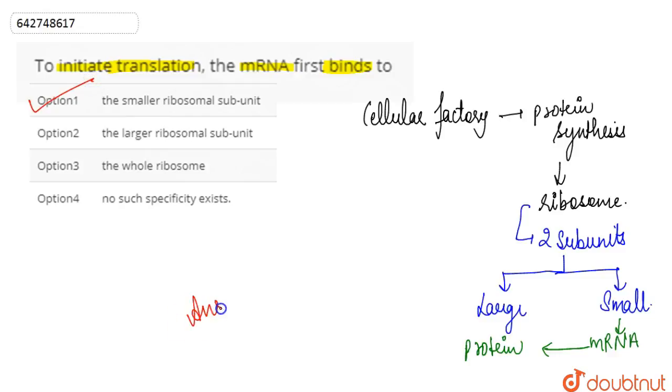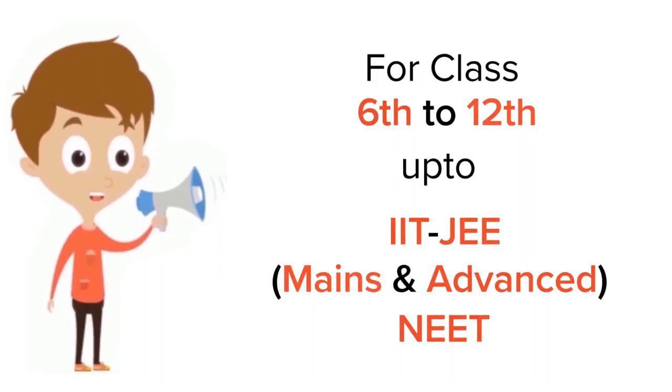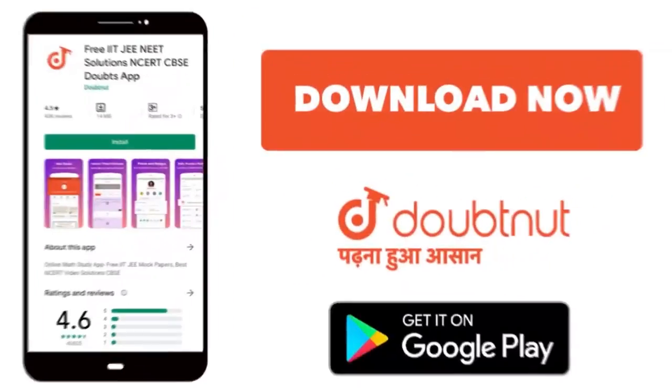For class 6th to 12th, IIT-JEE and NEET level, trusted by more than five crore students. Download Doubtnet app.